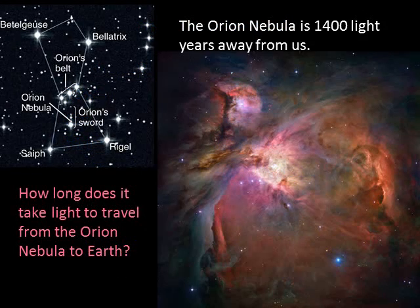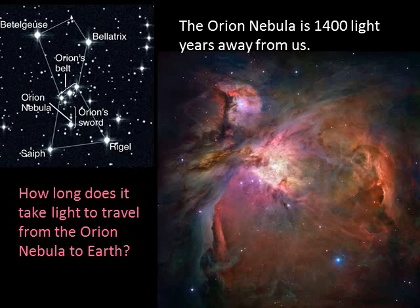Here is another example. You've probably seen the beautiful constellation Orion in the winter sky, very distinct with his three belt stars. Below Orion's belt is a sword, and within his sword is a nebula — you can see it as a fuzzy object with your naked eye. The image here is what it looks like to the Hubble Space Telescope. This nebula is actually a region of star formation; behind those clouds of gas and dust, new stars are being born. The Orion Nebula is located about 1,400 light years away, so it takes light 1,400 years to travel from the Orion Nebula to Earth.